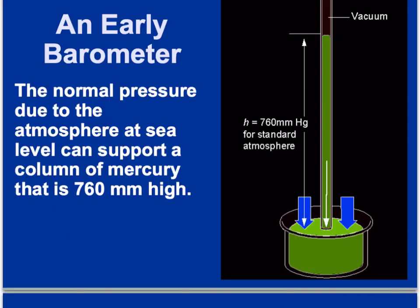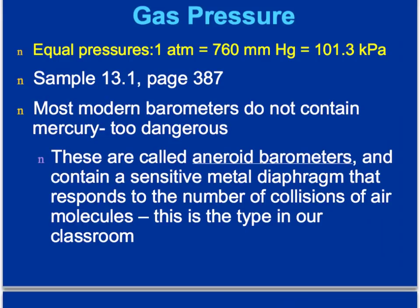Here's a picture of how an early barometer works. The key equivalents to write on your periodic table are: 1 atm = 760 mmHg = 760 torr = 101.3 kilopascals. Most modern barometers don't contain mercury because it's too dangerous. The newer ones are called aneroid barometers and contain sensitive metal diaphragms that respond to the number of collisions of air molecules.